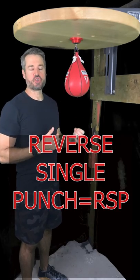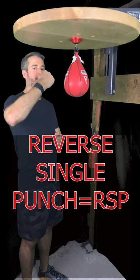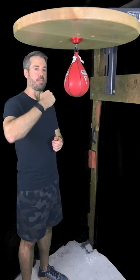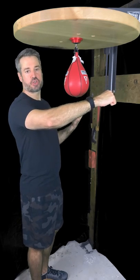start with the reverse single punch or RSP. It's the mirror image of that front circle punch, the first one we learned. Simply start with your fist behind the bag and punch towards your face.